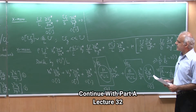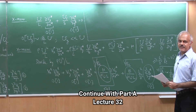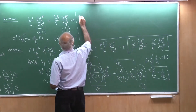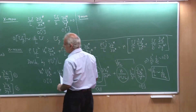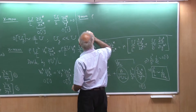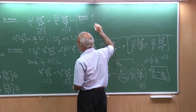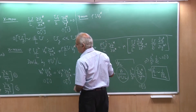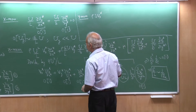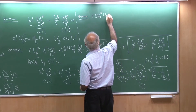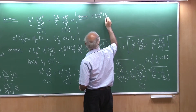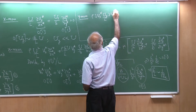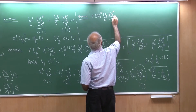Let us now work with the y momentum equation. It will be exactly the same thing - we will take the dimensional form and then non-dimensionalize it. The first term there is rho times Vx; for that I am going to write down u times Vx star, and for the Vy, it is Uy by L times del Vy star by del x star.